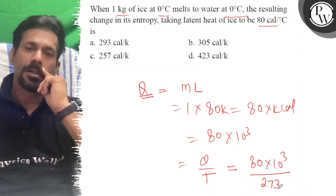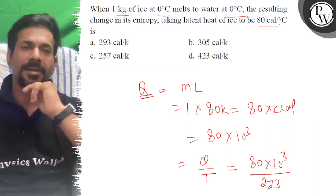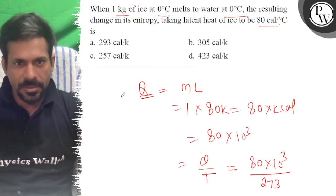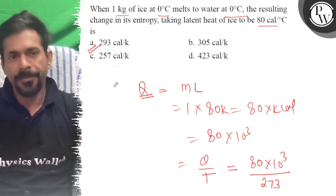So 3 won't come exactly. Looking at the options, one option shows 293. So the right answer to this question is 293 cal/K.